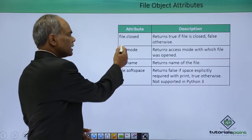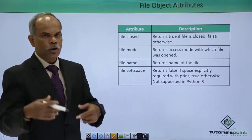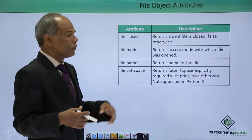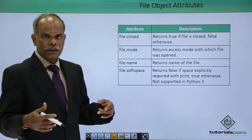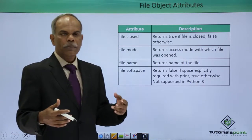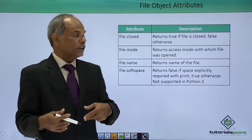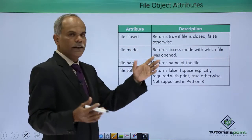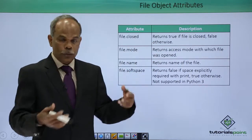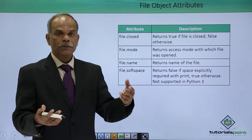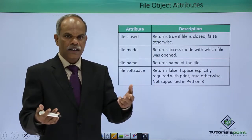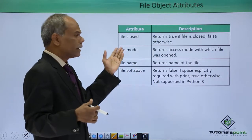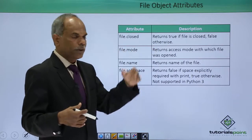You can ascertain whether a file is closed or not by verifying the attribute file.closed. This property has a Boolean value, either true or false. It returns true if the file is closed; otherwise, if the file is open, that means if you have opened a file and before closing it, if you test this attribute, it will be false.